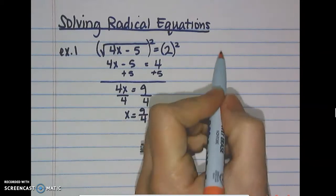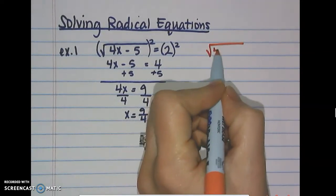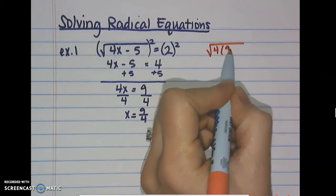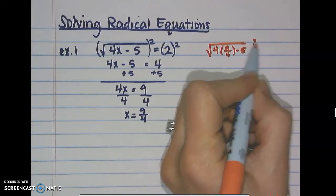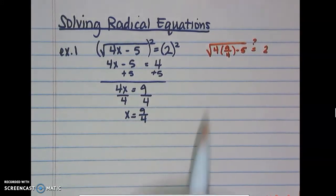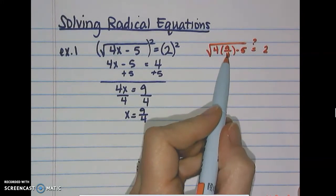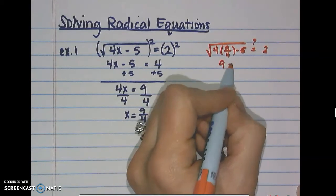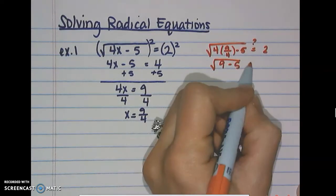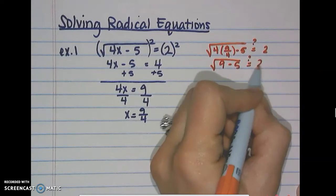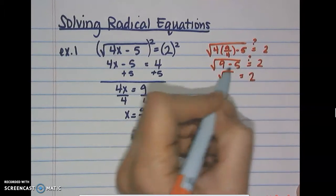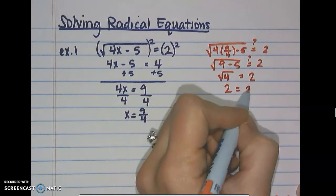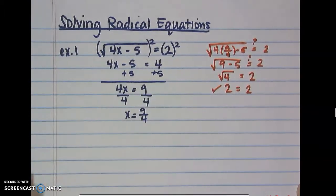Plugging back in: the square root of 4 times 9/4 minus 5. The 4s cancel, leaving 9 minus 5 under the square root. 9 minus 5 is 4, and the square root of 4 is 2. Since that equals 2, we know it works and x = 9/4 is our answer.